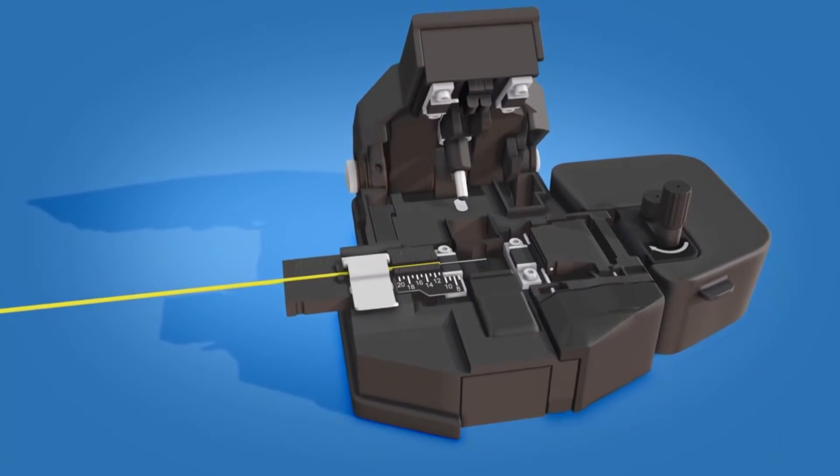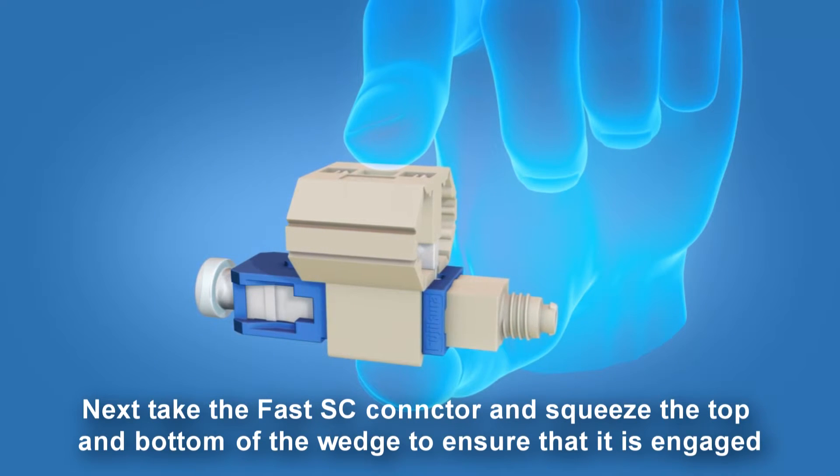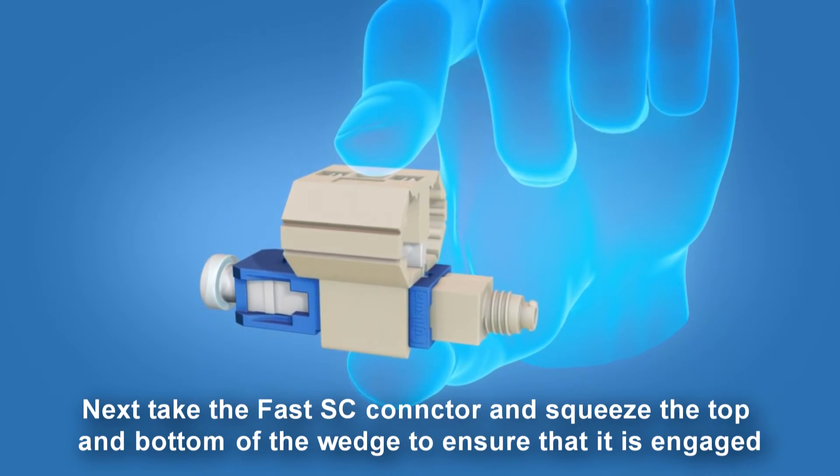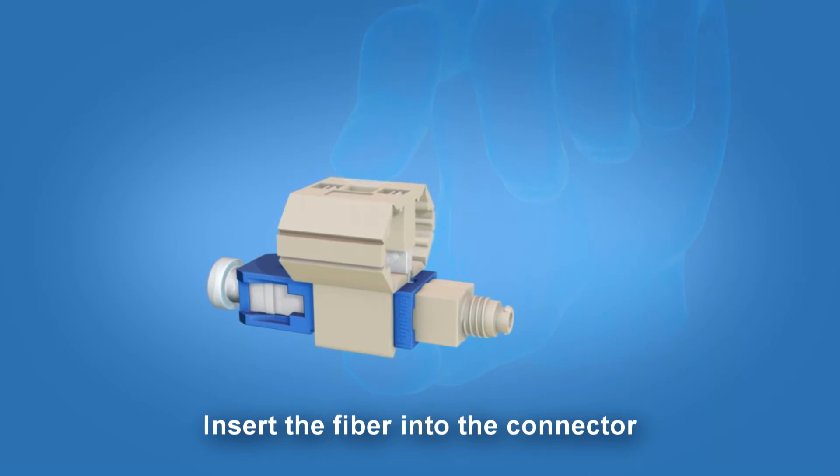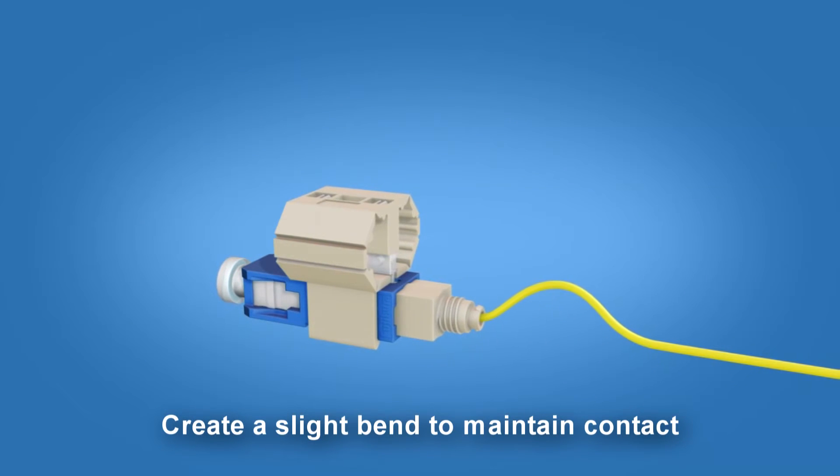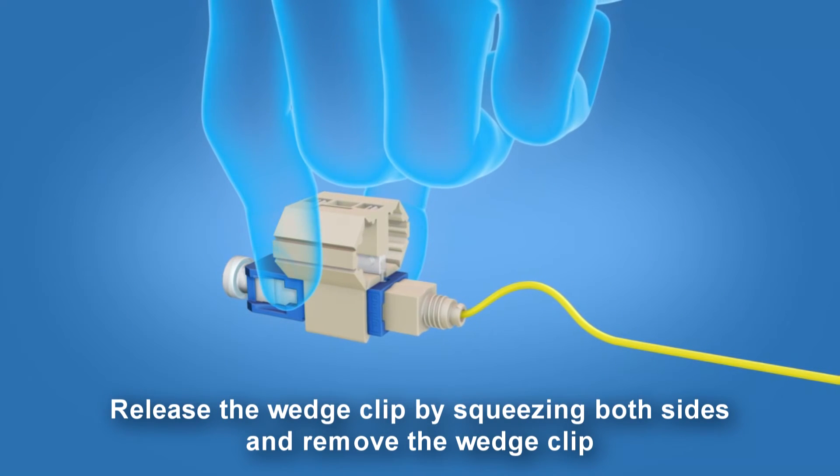Take the Fast SC connector and squeeze the top and bottom of the wedge to ensure it is engaged. Insert the fiber into the connector, create a slight bend to maintain contact, release the wedge clip by squeezing both sides, and remove the wedge clip.